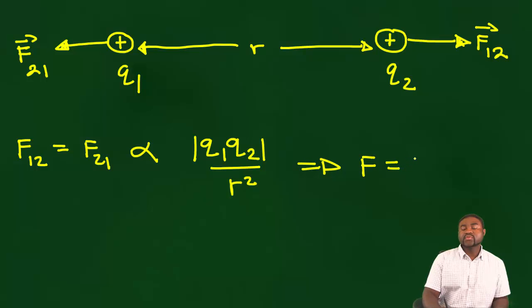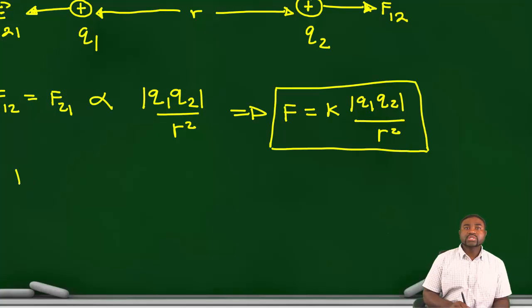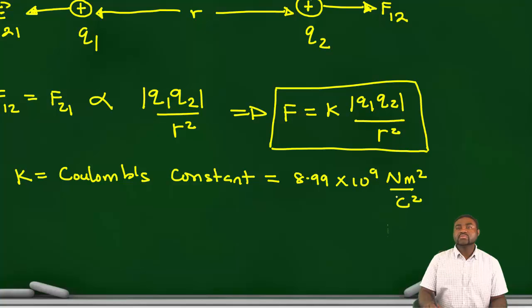This means that the size of the force between two charges is equal to a constant multiplied by Q1 Q2, all divided by R squared. Now the constant K is known as Coulomb's constant and is equal to 8.99 times 10 to the power 9 Newton meters squared divided by Coulomb squared.